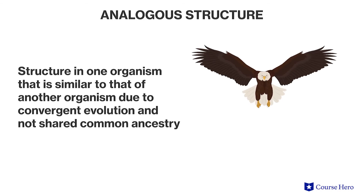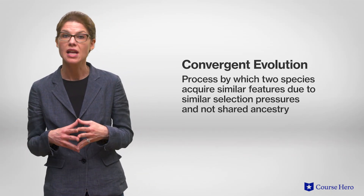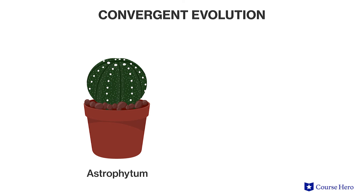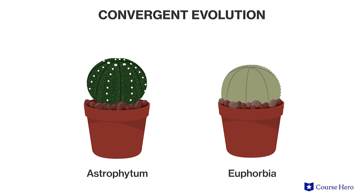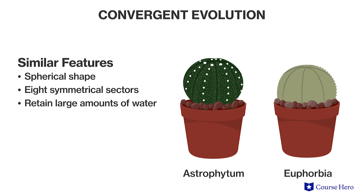An analogous structure is a structure in one organism that is similar in structure or function to a structure in another organism because of convergent evolution, not common ancestry. Convergent evolution is a process by which two species acquire similar features due to similar selection pressures — that is, similar environments — and not due to shared ancestry. For example, Astrophytum live in North American deserts and are relatives of the cacti plants. Euphorbia, a succulent plant from Africa, evolved independently from Astrophytum. However, both share similar spherical shapes, have eight symmetrical sectors, and can take in and retain large amounts of water. They're from different evolutionary paths and developed in different locations, but they look so much alike that people might think they're the same plant genera.